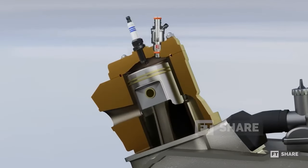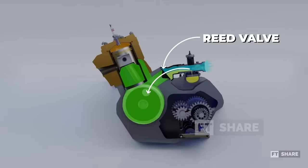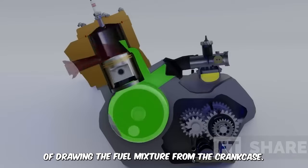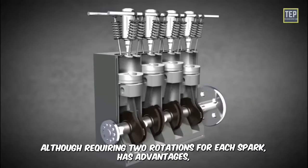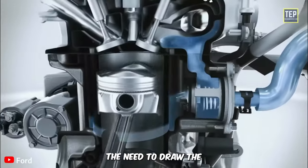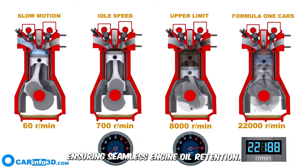In a two-stroke engine, a single spark ignites every crankshaft rotation, theoretically demanding less effort per power cycle. However, this efficiency comes with the challenge of drawing the air-fuel mixture from the crankcase. But the four-stroke engine, although requiring two rotations for each spark, has advantages. Notably, it eliminates the need to draw the air-fuel mixture from the crankcase, ensuring seamless engine oil retention.